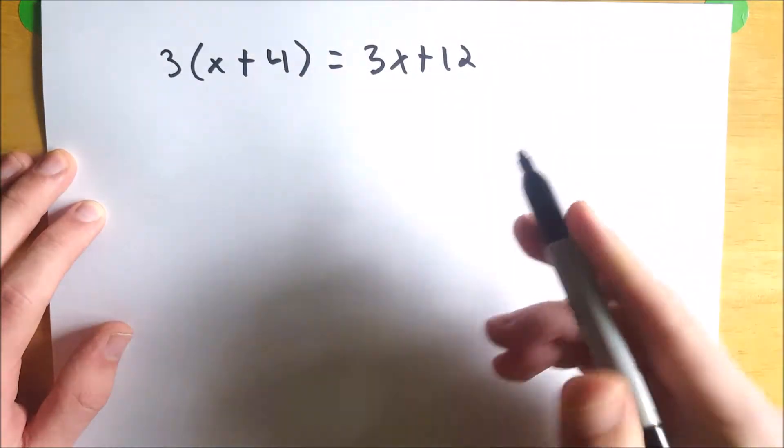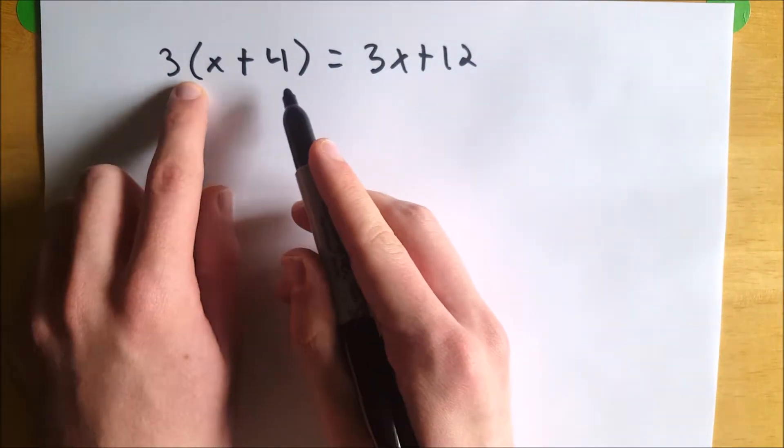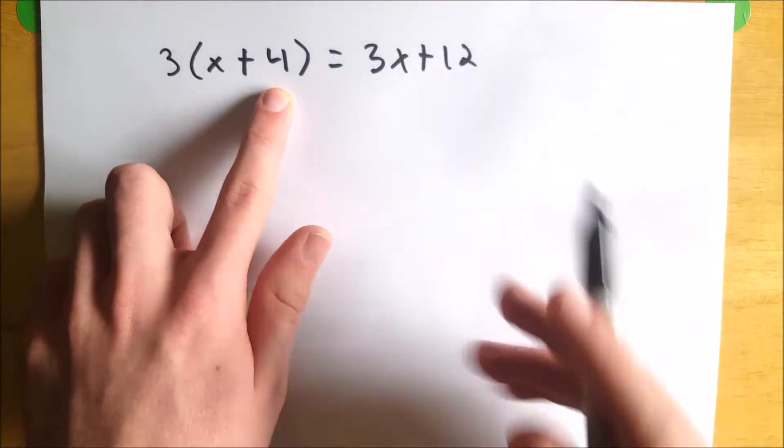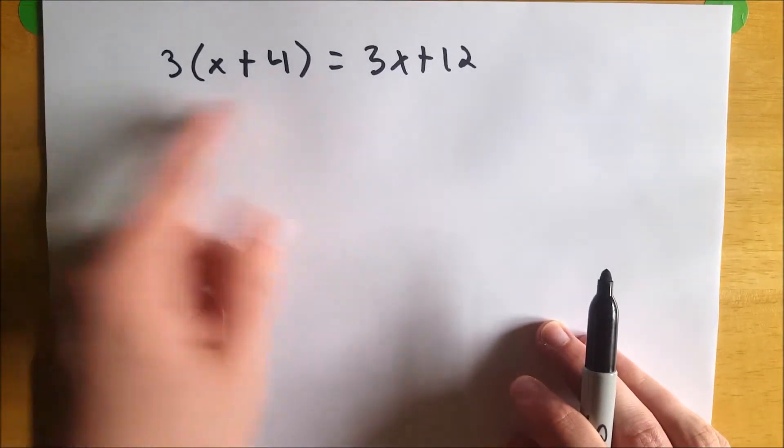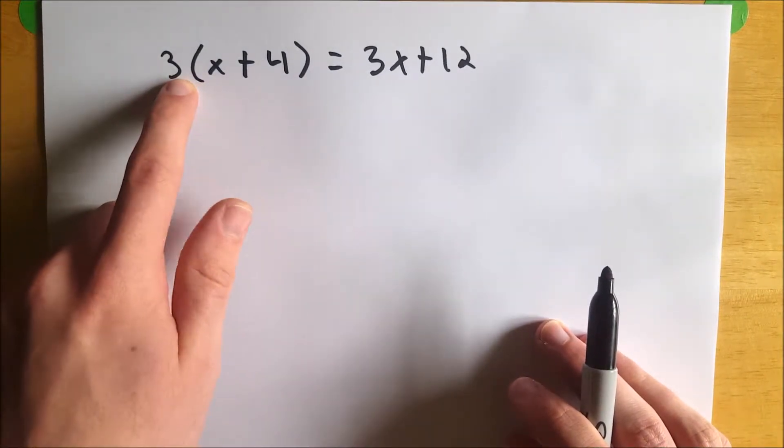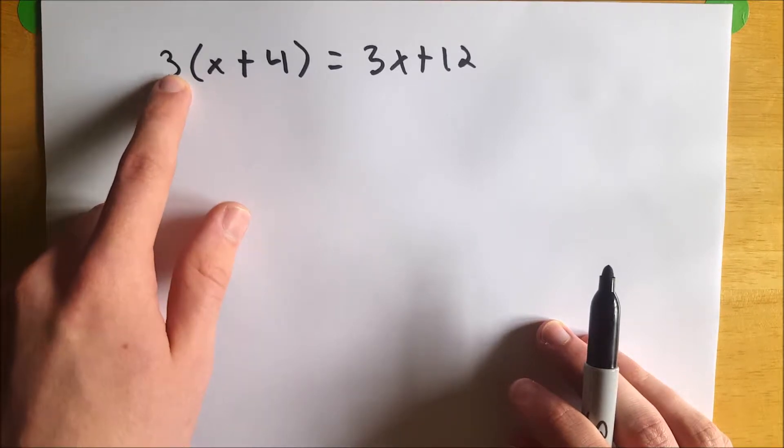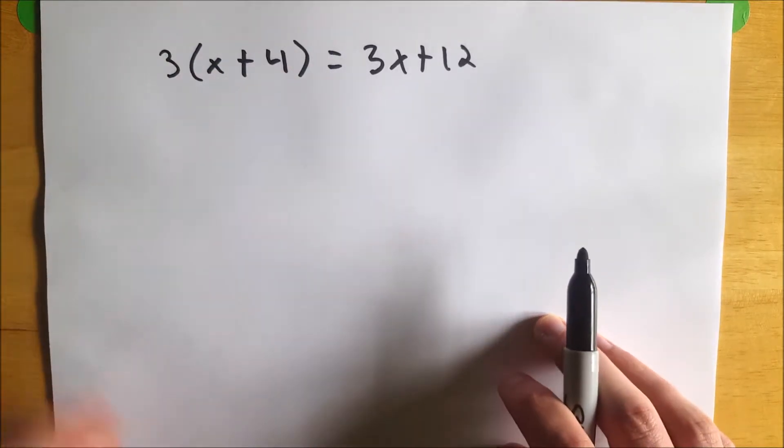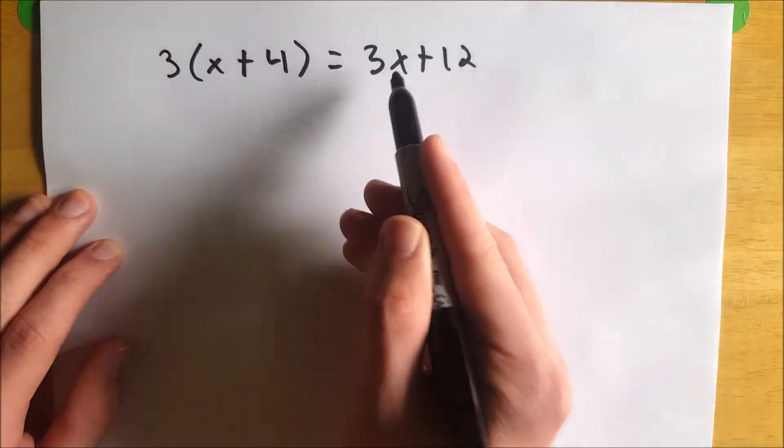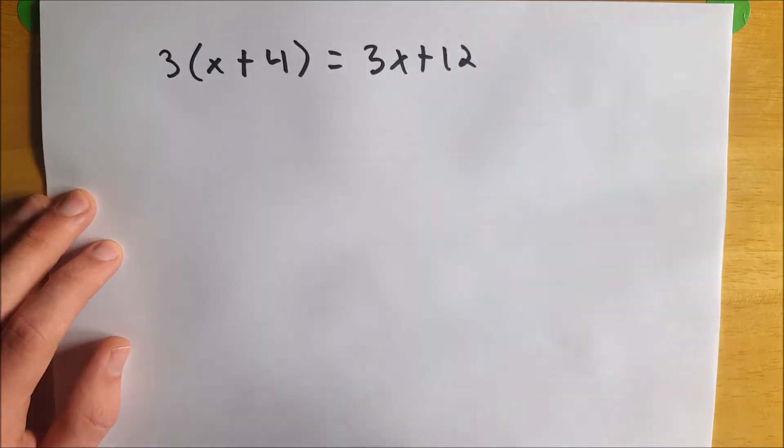The distributive property tells us that when we have parentheses around the sum or difference of numbers, of quantities, and we have a number being multiplied on the outside of those parentheses, it gets multiplied by everything inside. So we do 3 times x is 3x, and 3 times 4, which is 12.